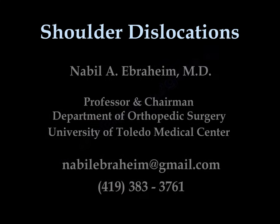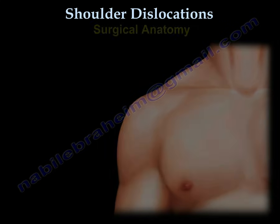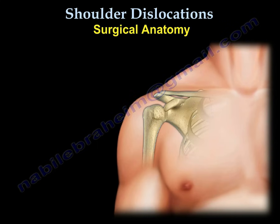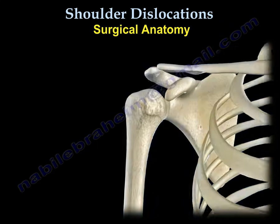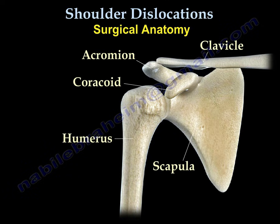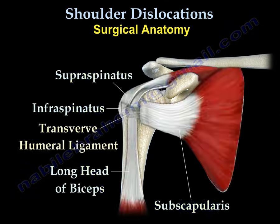Shoulder Dislocations: Surgical anatomy. You can see here the bony anatomy of the shoulder area. It includes the humerus and the scapula. You can also see the important muscles attached to the shoulder area, including the supraspinatus, subscapularis, and long head of the biceps.